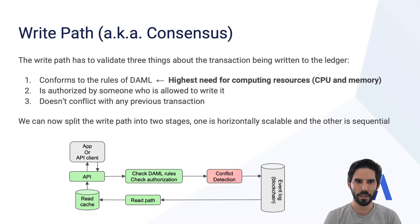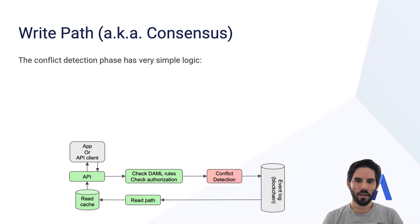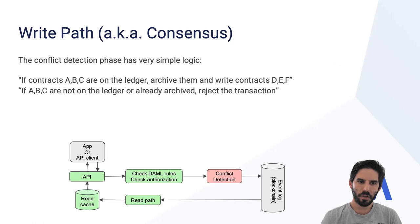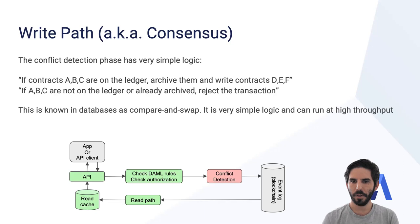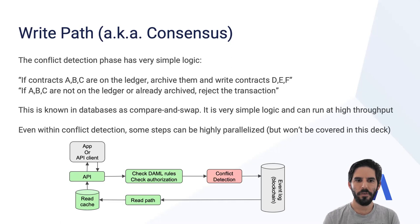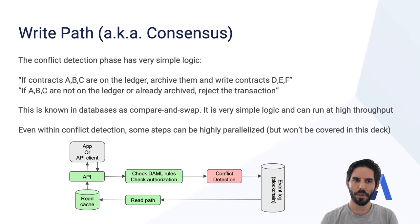Let's dig into conflict detection. The conflict detection phase has very simple logic. As an example, one transaction may say: if contracts A, B, and C are on the ledger, archive them and instead write contracts D, E, and F. If A, B, and C are not on the ledger or if they've already been archived, reject that transaction. This is a very well-known logic within the database world — it's called compare-and-swap. It's very simple logic and can run at high throughput. Even within conflict detection, some steps can be highly parallelized, but that won't be covered in this deck. Within the context of blockchains, conflict detection is really the only piece of this whole system that needs to run within the consensus algorithm.